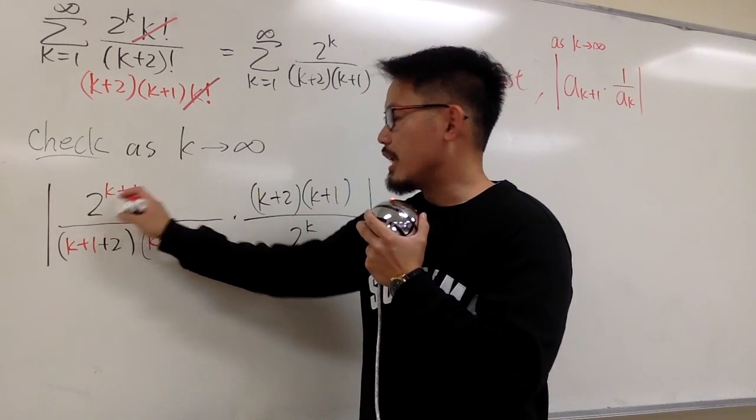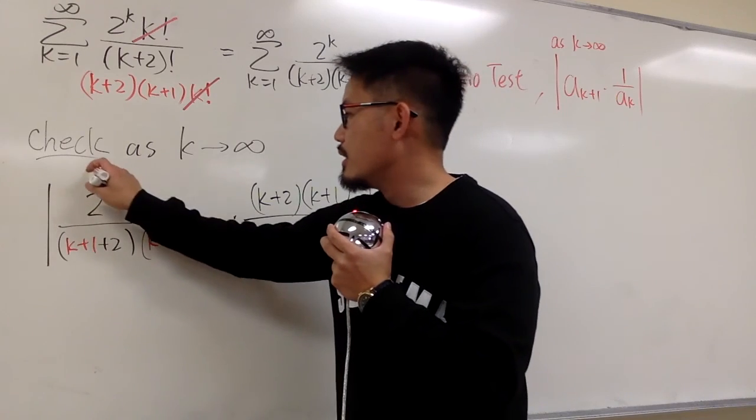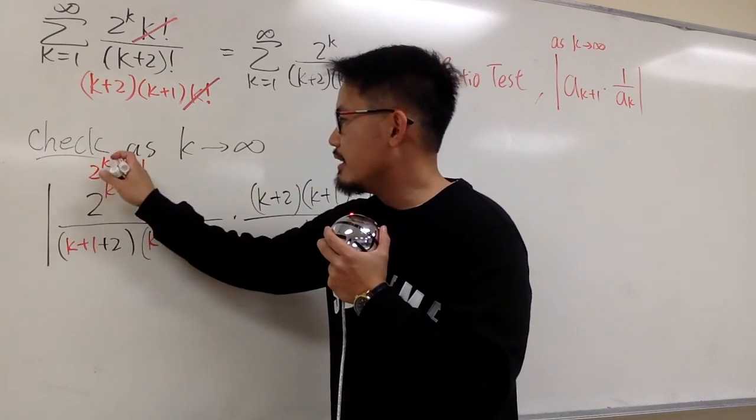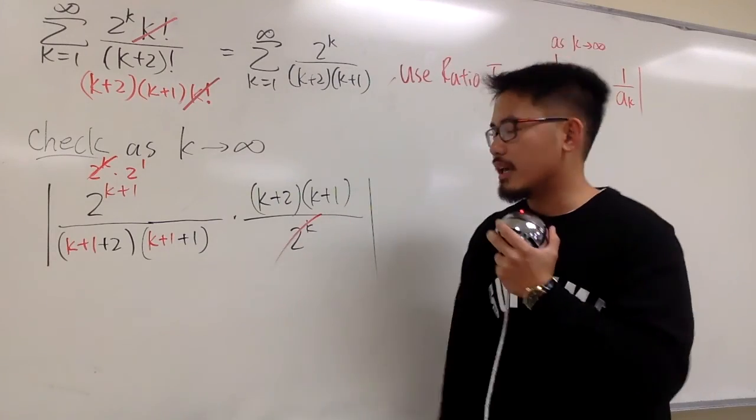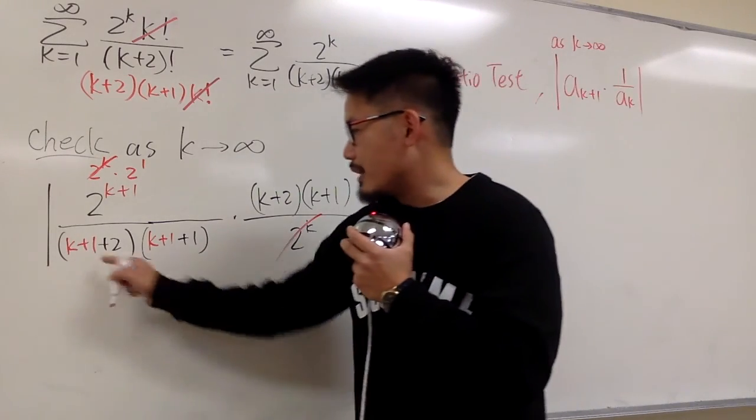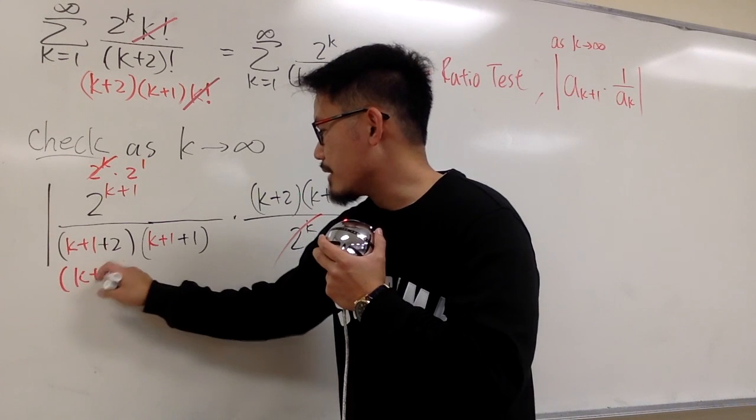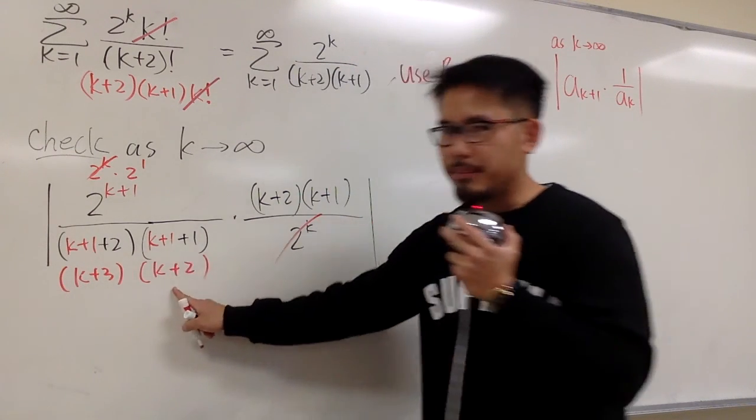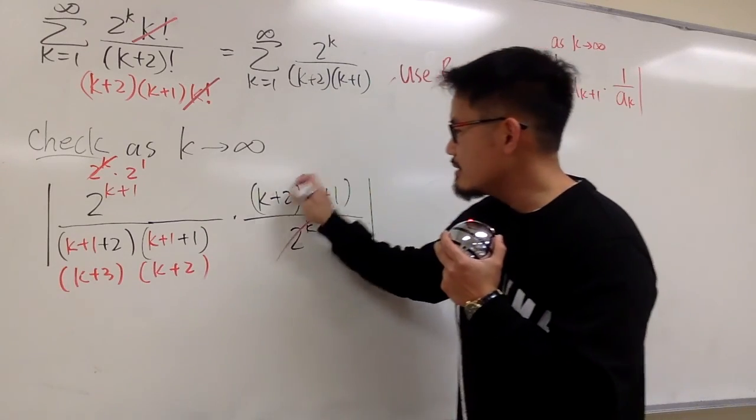Let's do this first. This is 2 to the k plus 1, we can break this down as 2 to the k times 2 to the first. And this 2 to the k and that 2 to the k cancel each other out. And this right here, I know it's going to be k plus 3, and this is the same as k plus 2. And this k plus 2 cancels out with that k plus 2.